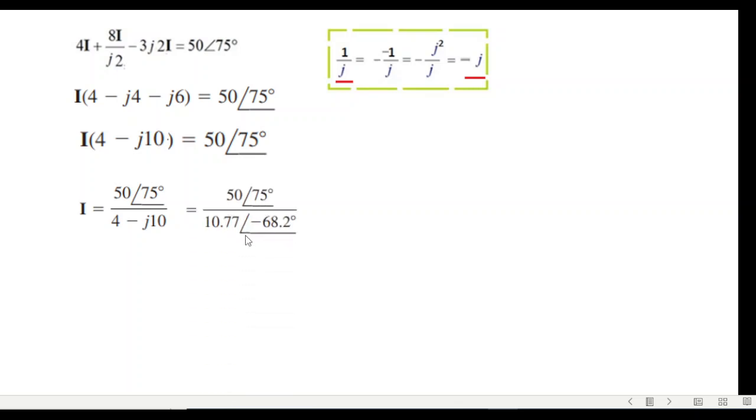Converting into polar, we get this. And now we can easily divide the magnitude and subtract the angle. Dividing the magnitude, we get 4.65. And this minus 68, when it goes up, it will become plus 68, plus 75 will be 143.2 degrees.